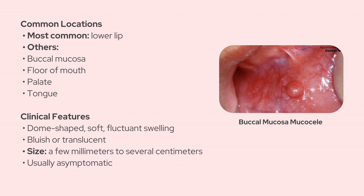Clinically, mucoceles can vary in presentation depending on their depth and location. The superficial ones usually appear as small, raised, fluid-filled vesicles ranging from just a few millimeters up to a couple of centimeters. They often have that classic bluish hue because of the thin overlying mucosa and the presence of mucus just beneath it. The most common site is definitely the lower lip, but they can also show up on the buccal mucosa, the floor of the mouth, the palate, and even the tongue.